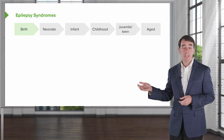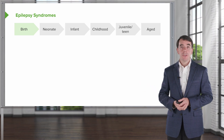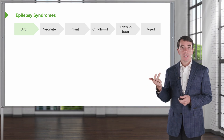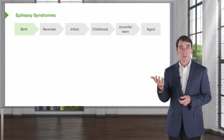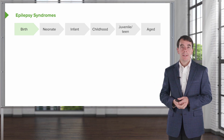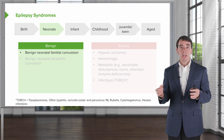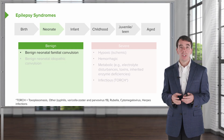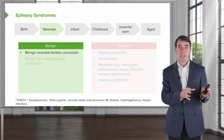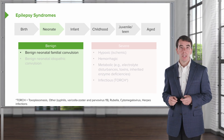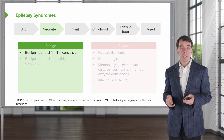Here you can see that the age changes over time. We start by thinking of seizures that develop at birth, in the neonatal period, infantile period, childhood, juvenile or adolescent time range, and in adults. When we think about seizures, we can think about those that are associated with normal neurologic function and are benign, and those that may be associated with more severe neurologic dysfunction and are severe.